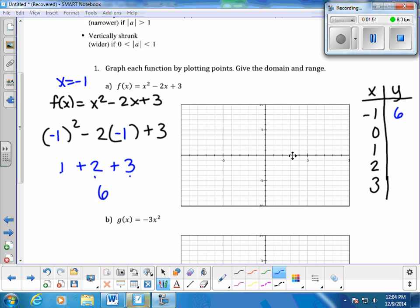That is the ordered pair. Negative 1, so I start at 0, 0, and I go negative 1 up 6. That represents that point.